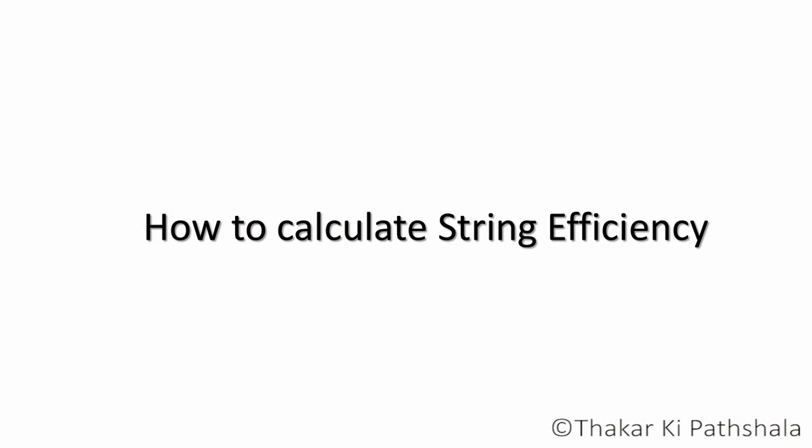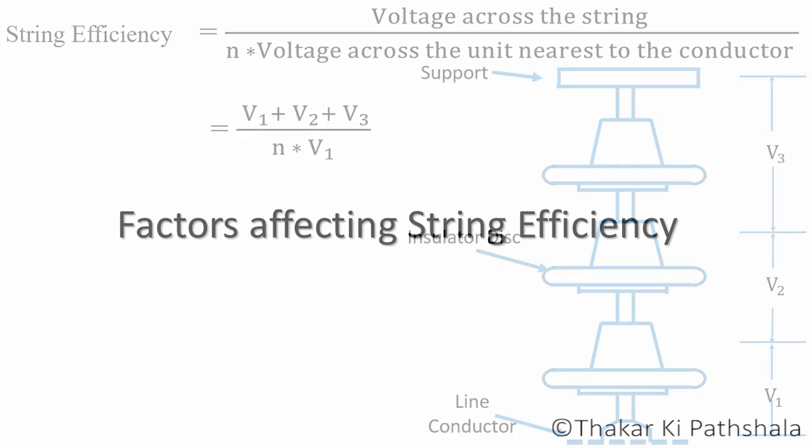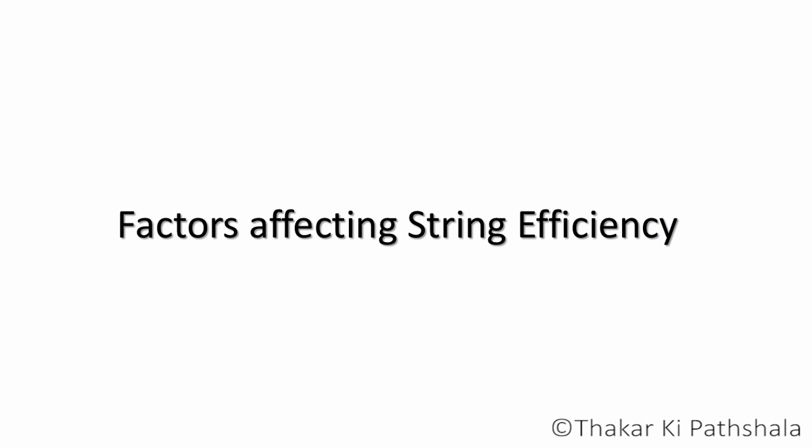Now let's take a look at how to calculate string efficiency. We can calculate it by the following equation: voltage across the string divided by N into voltage across the unit nearest to the conductor. Voltage across the string means the summation of voltage between all the discs, which is V1 plus V2 plus V3, divided by N — where N is the number of disc units — multiplied by voltage across the nearest unit to the conductor, which is V1.